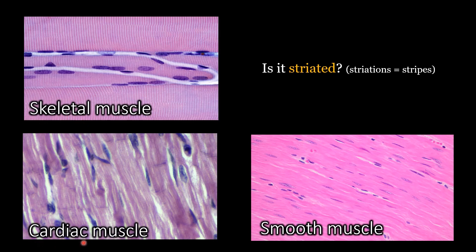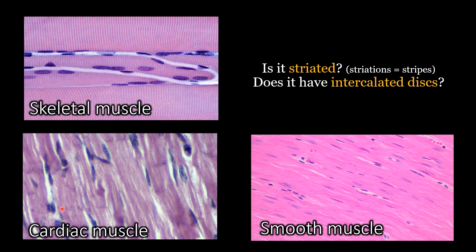In cardiac muscle, the striations are less obvious. If you look closely enough, you can see some light and dark bands, but you can always see intercalated discs in cardiac muscle. Those are the darker lines going in the same direction as the other striations. If you see those, you automatically know that it's cardiac muscle.